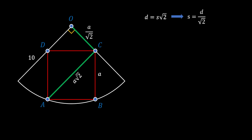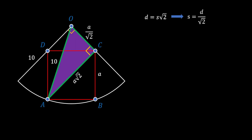Since triangle OCD is an isosceles right triangle, angle OCD equals 45 degrees. The same applies to triangle ADC — it is also isosceles right triangle, so angle DCA also equals 45 degrees. From here we conclude the angle between these two green lines is 90 degrees. Pulling line OA as the radius equal to 10, we have formed this purple right triangle. Using the Pythagorean theorem: OC² plus AC² equals OA².